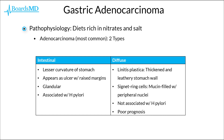The underlying pathophysiology of gastric adenocarcinoma appears to be related to the fact that these regions in East Asia have diets which are rich in nitrates and salt. In particular, these nitrates go on to form nitrosamines, which are notorious for causing inflammation of the stomach, ultimately leading over time to chronic inflammation and eventually the development of gastric adenocarcinoma.